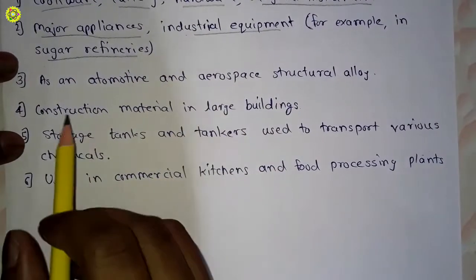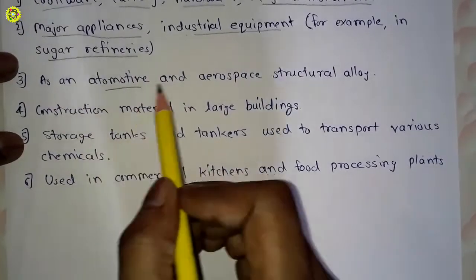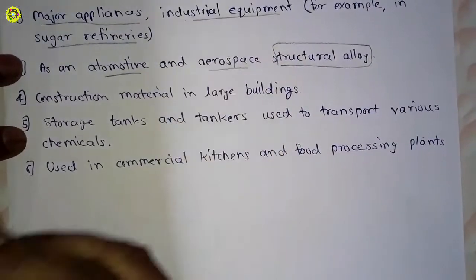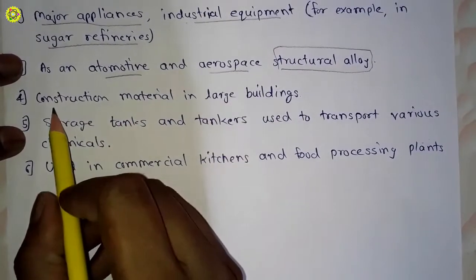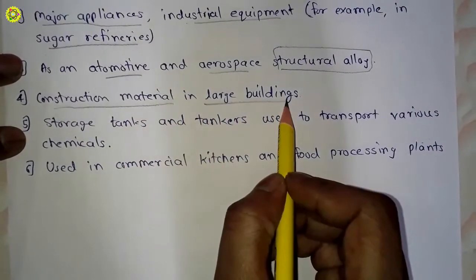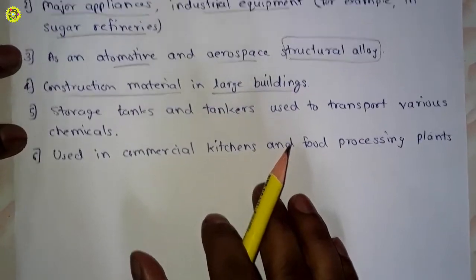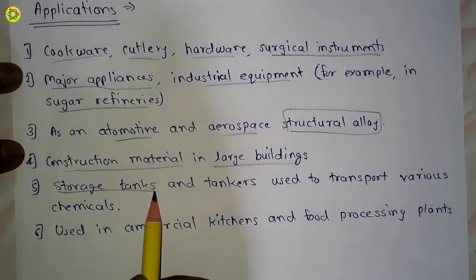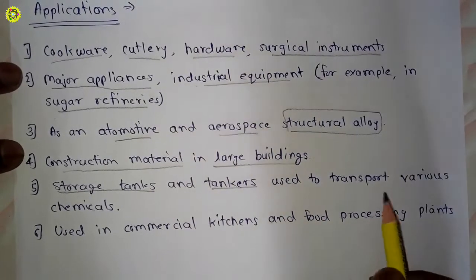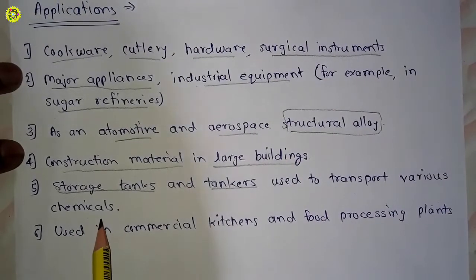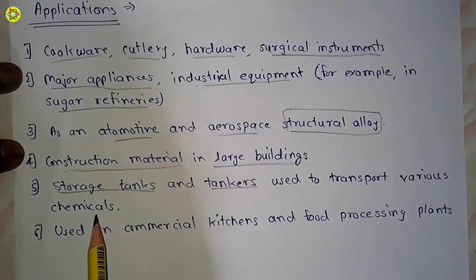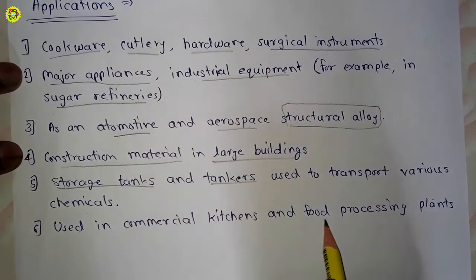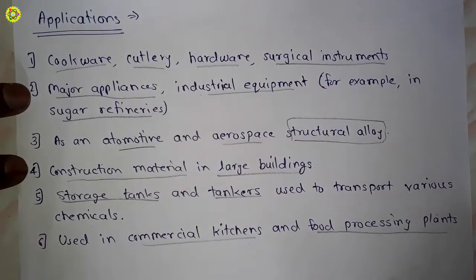Stainless steel is used as an automotive and aerospace structural alloy. It is also used as a construction material in large buildings, in storage tanks and tankers used to transport various chemicals, and in commercial kitchens and food processing plants.